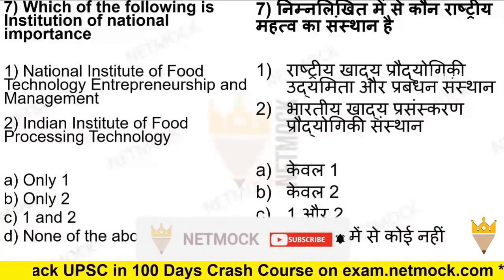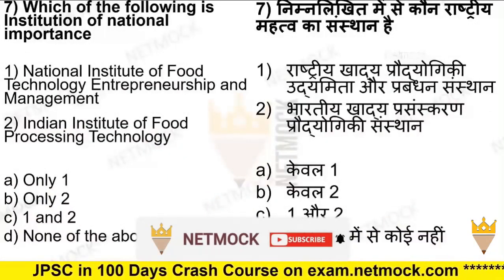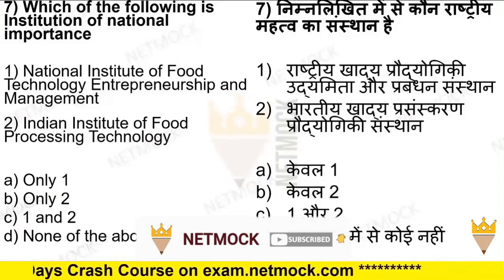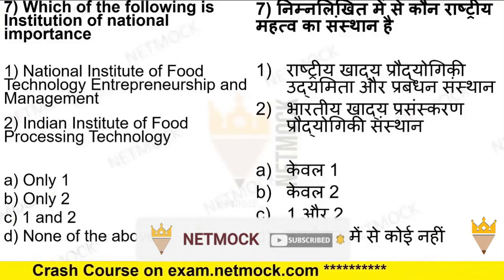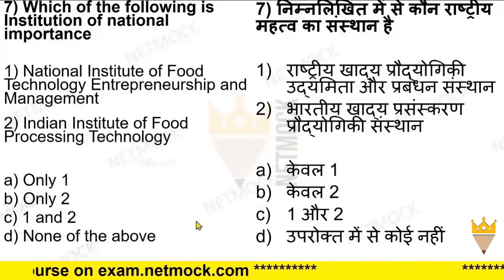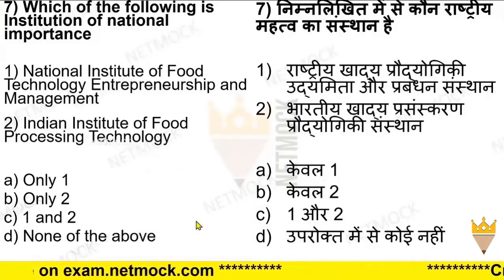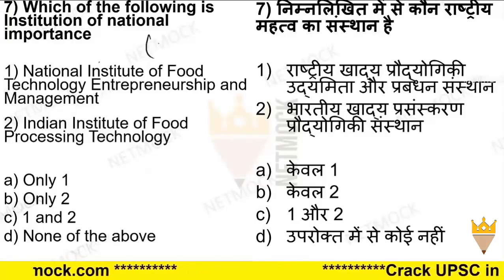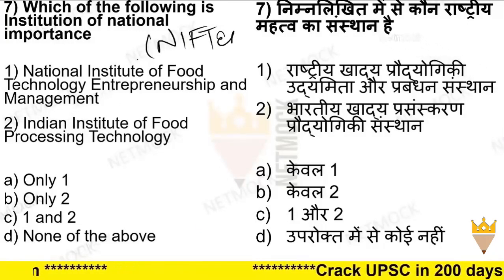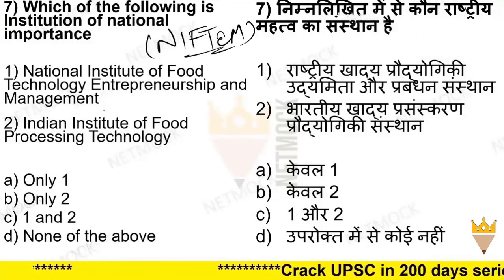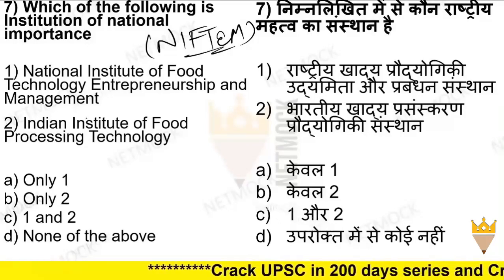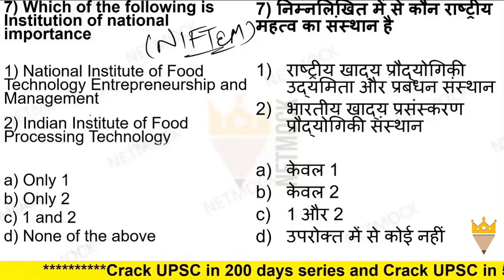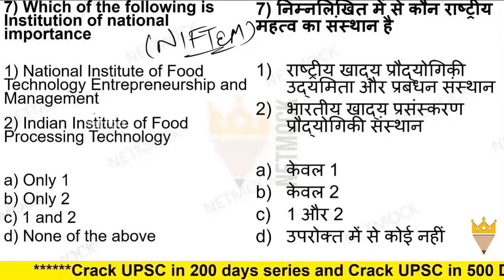Which of the following is an institution of national importance? There are two institutions in front of you. The first name is National Institute of Food Technology Entrepreneurship and Management, which is called NIFTAM. The second is Indian Institute of Food Processing Technology. Think about which one qualifies, and then we will start the discussion about this.